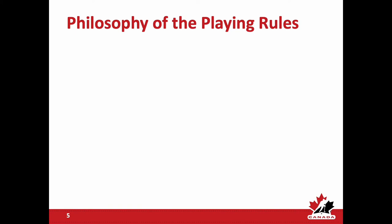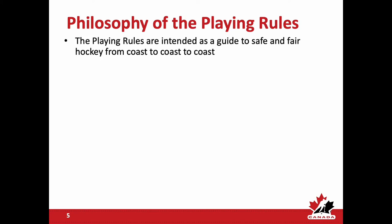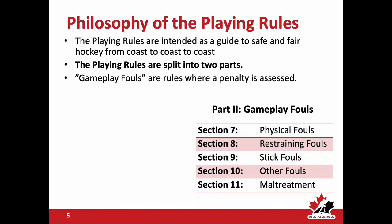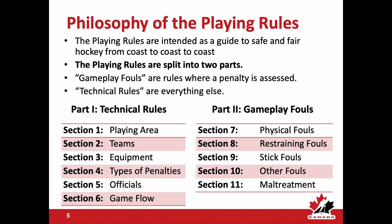The philosophy behind the playing rules: Hockey Canada understands that the playing rules are intended to be a guide to safe and fair hockey from coast to coast to coast, taking a common sense approach to a safe and fair environment. The playing rules are now split into two primary parts: the game fouls, where penalties are assessed (sections 7 through 11), and the technical rules, where everything else is housed — primarily terms of reference, definitions, measurements, and guidelines that do not necessarily apply a penalty.